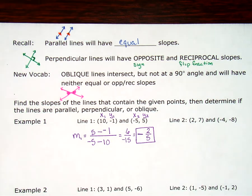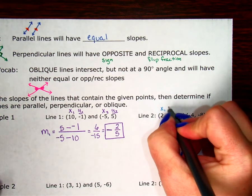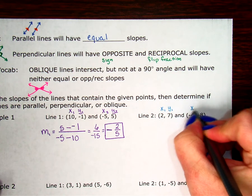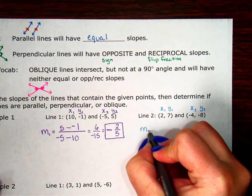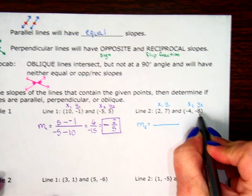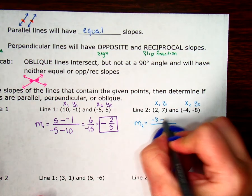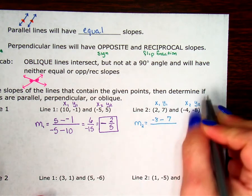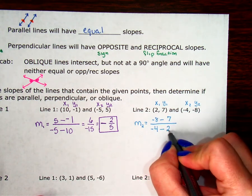Let's go see what the second slope is. So I'm going to do the same thing for line 2. Label x1, y1, x2, y2. My slope for line 2. Start with my second y value, negative 8, minus 7. Then go to my x's, negative 4 minus 2.